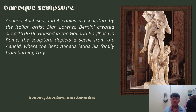The last baroque sculpture example is Aeneas, Anchises and Ascanius, a sculpture by Italian artist Gian Lorenzo Bernini, created circa 1618 to 1619, housed in the Galleria Borghese in Rome. The sculpture depicts a scene from the Aeneid where the hero Aeneas leads his family from burning Troy.